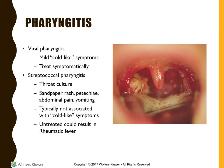There are two types of pharyngitis. The first is viral, which presents with mild cold-like symptoms, is self-limited, does not respond to antibiotics, and is treated symptomatically with supportive care. Strep pharyngitis is a bacterial illness diagnosed by throat culture and requires antibiotics. It presents with a sandpaper rash, petechiae, abdominal pain, and vomiting. It's typically not associated with cold-like symptoms, and if untreated it could cause rheumatic fever.